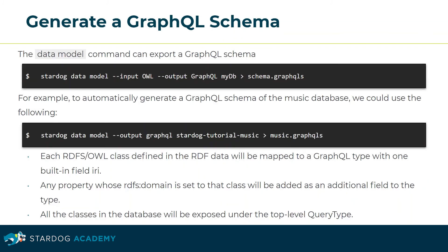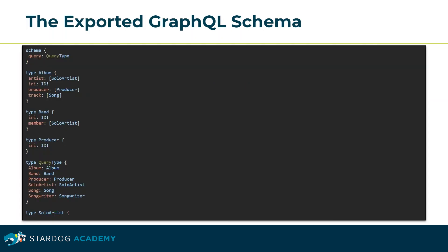You can use the data model command to export a GraphQL schema. Each RDFS or OWL class defined in the RDF data will be mapped to a GraphQL type with one built-in field IRI. Any property whose domain is set to that class will be added as an additional field to the type. All the classes in the database will be exposed under the top-level query type. When exported as a GraphQL schema, the RDF data I showed earlier would look like this.